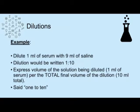Now let's use a more lab-practical example. We want to dilute one milliliter of a patient's serum with nine milliliters of saline. The dilution would be written one to ten, because we have nine plus one for a total volume of ten milliliters, and one milliliter of patient serum. So you express the volume of the solution being diluted per the total volume of the dilution — that is a one to ten.